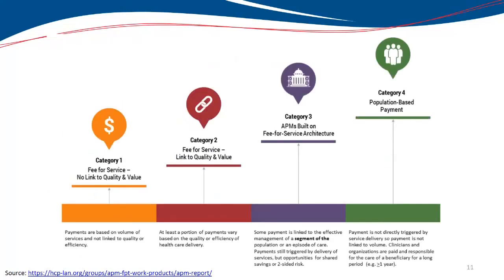The Healthcare Payment Learning Action Network, or the LAN, created categories of what payment models look like. Category one is a typical fee-for-service structure with no link to quality or value. Category two is fee-for-service linked to quality and value with some requirements. Category three is alternative payment models built on a fee-for-service architecture — modifications to fee-for-service. Category four is a different approach where payment is not directly triggered by service delivery, not based on a fee-for-service architecture — it could be a value-based payment approach.